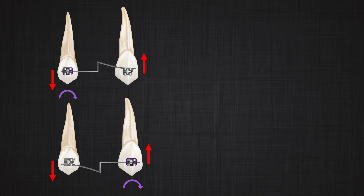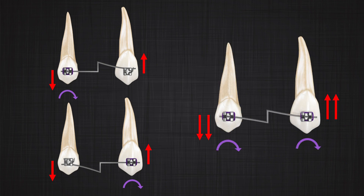Now, what happens if I engage the wire from both sides inside the bracket? Of course, because now on both sides we have two contact points, the system is considered a two-couple system. To see what forces and moments appear in the system, we just need to add the two one-couple systems together. As you can see, the magnitude of the intrusion and extrusion that appear in the system are much higher than what we see with the V-bend — this is one of the good characteristics of the step-bend with a lot of clinical application. Also, both moments that appear on the premolar and canine are equal in magnitude and in the same direction; in this example, both are clockwise.